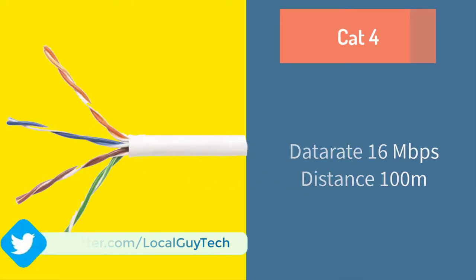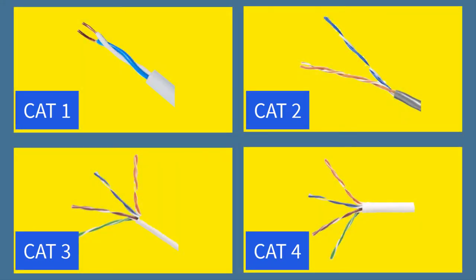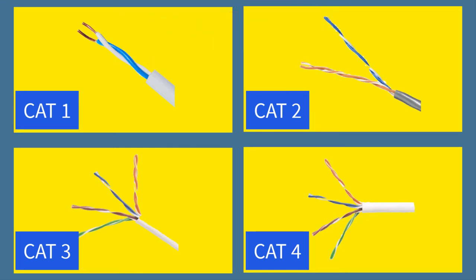Cat4 cable supports a data rate of 16 Mbps at a maximum distance of 100 meters. From cat1 to cat4 were older cables supporting less data rate and up to 20 MHz bandwidth. We need large bandwidth to achieve high data rate, so in today's modern networks we rarely find these cables.